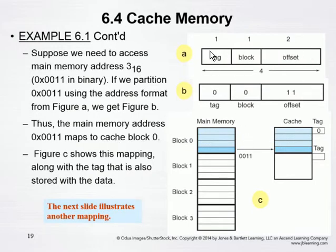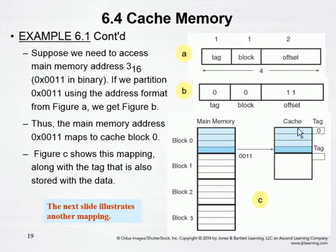Let's say we've set up our system so that when we're trying to address cache, we have one bit for the tag, one bit for the block, and two bits for the offset. So if we say that we're putting something in block zero with a tag of zero and an offset of one one, which is three — notice what we're doing here is we're taking block zero in memory and putting it into block zero. The tag is being used to indicate the block of cache, and we're just moving it all over. All four parts of that move over.